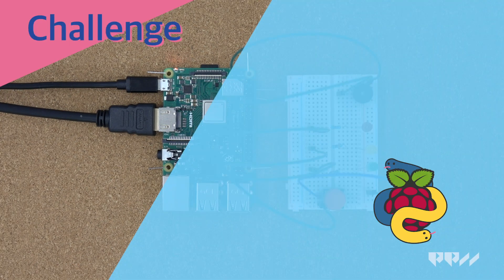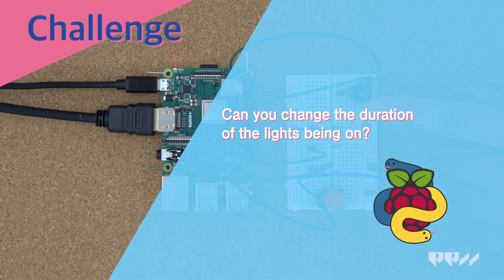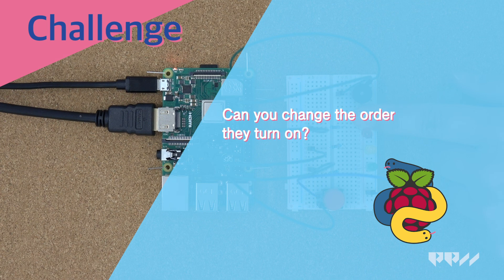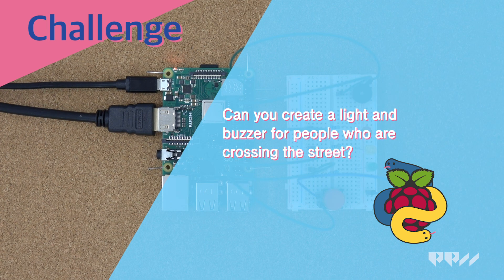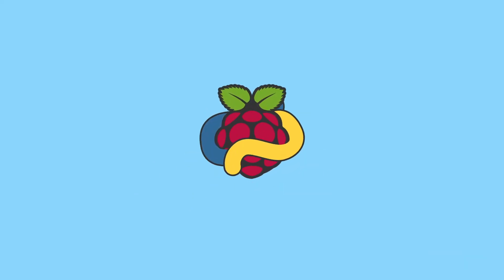Challenge. Can you change the duration of the lights being on? Can you change the order they turn on? Can you create a light and buzzer for people who are crossing the street?